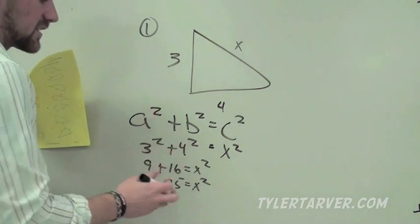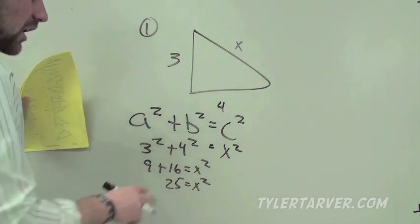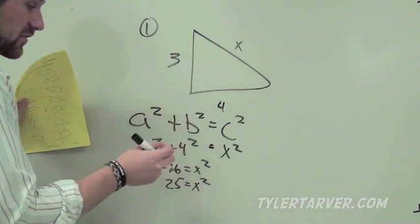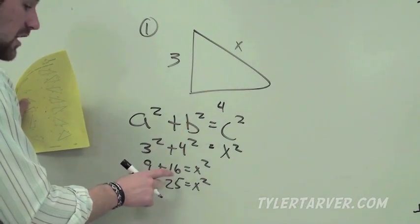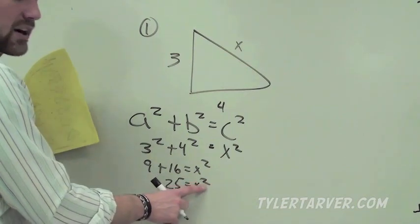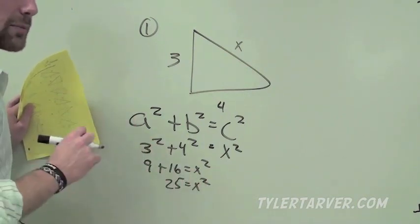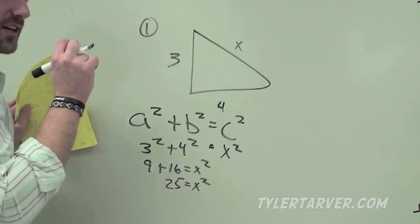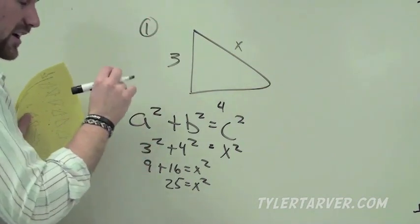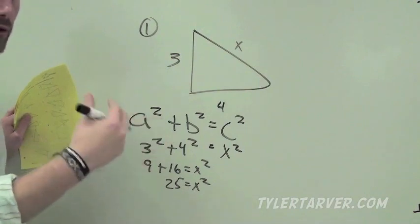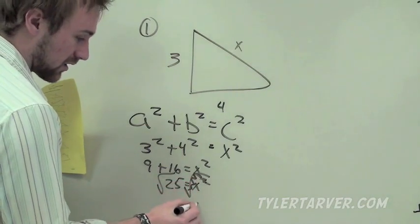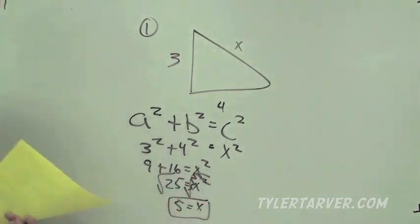Here's the last step — this is where people get confused. First, you always square those numbers: 3 squared is 9, 4 squared is 16. Then add them together to get 25. Now we need to get rid of the squared. To get rid of a square, you do the opposite, which is the square root. The square root cancels out, and x equals 5.